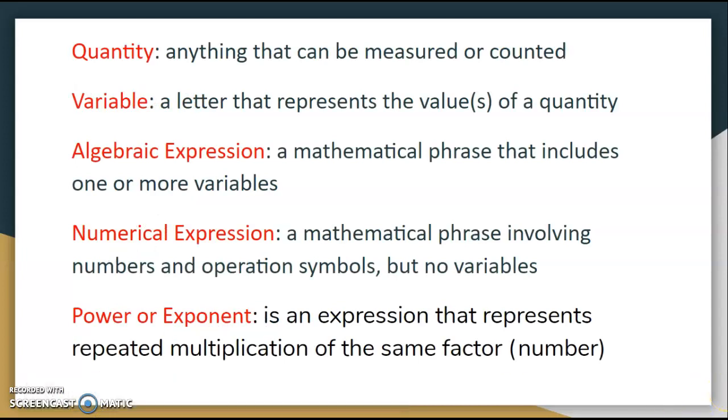Quantity is defined as anything that can be measured or counted. A variable is a letter that represents the value or values of a quantity. Algebraic expression is a mathematical phrase that includes one or more variables. A numerical expression is a mathematical phrase involving numbers and operation symbols, but no variables. A power or exponent is an expression that represents repeated multiplication of the same factor or number.